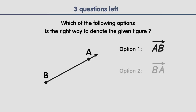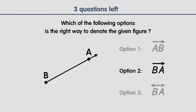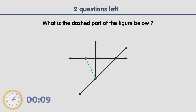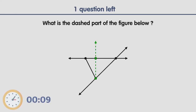Which of the following figures show a dashed line segment? Correct — figure A is showing a dashed line segment. Which of the following options is the right way? That's right — the answer is option two. What is the dashed part of the figure below? That's right — it's a line segment. What is the dashed part of the figure below? That's right — it's a ray.